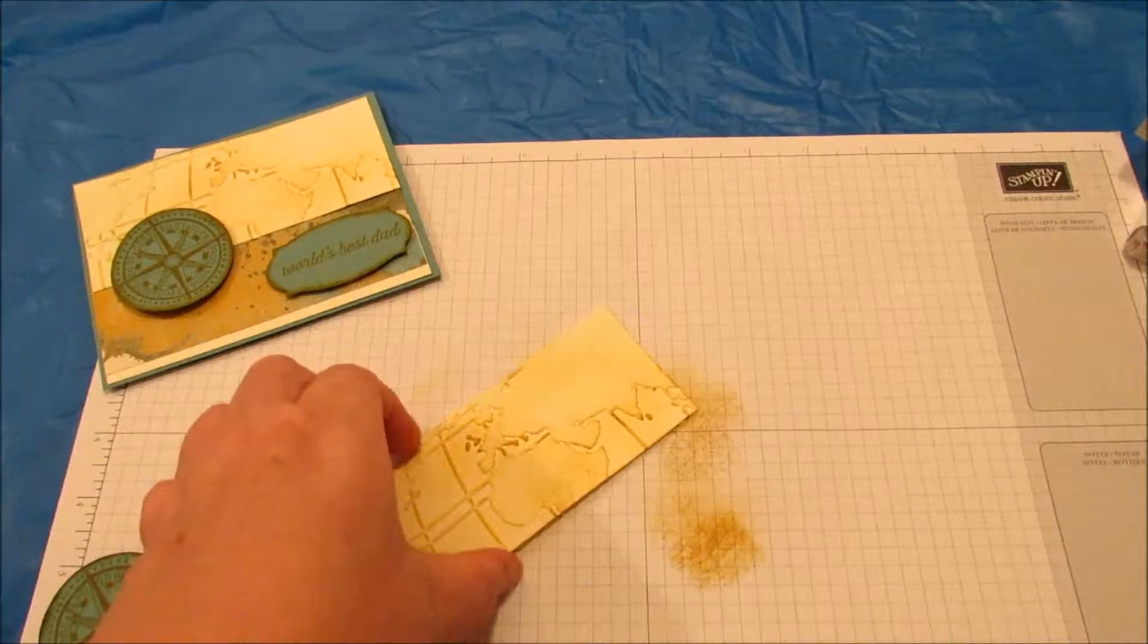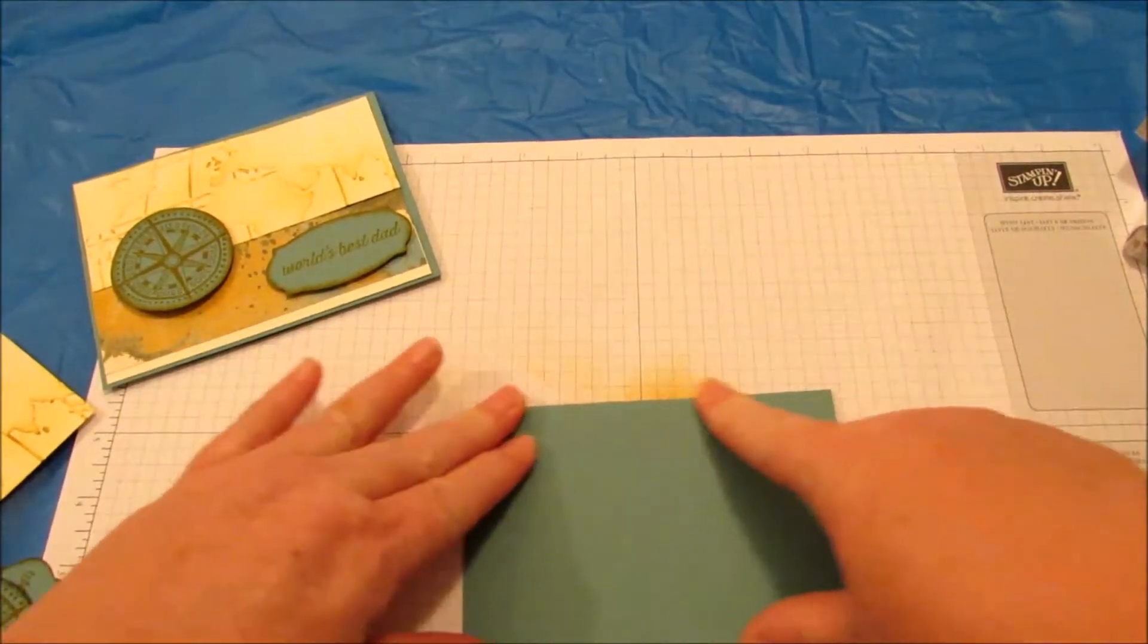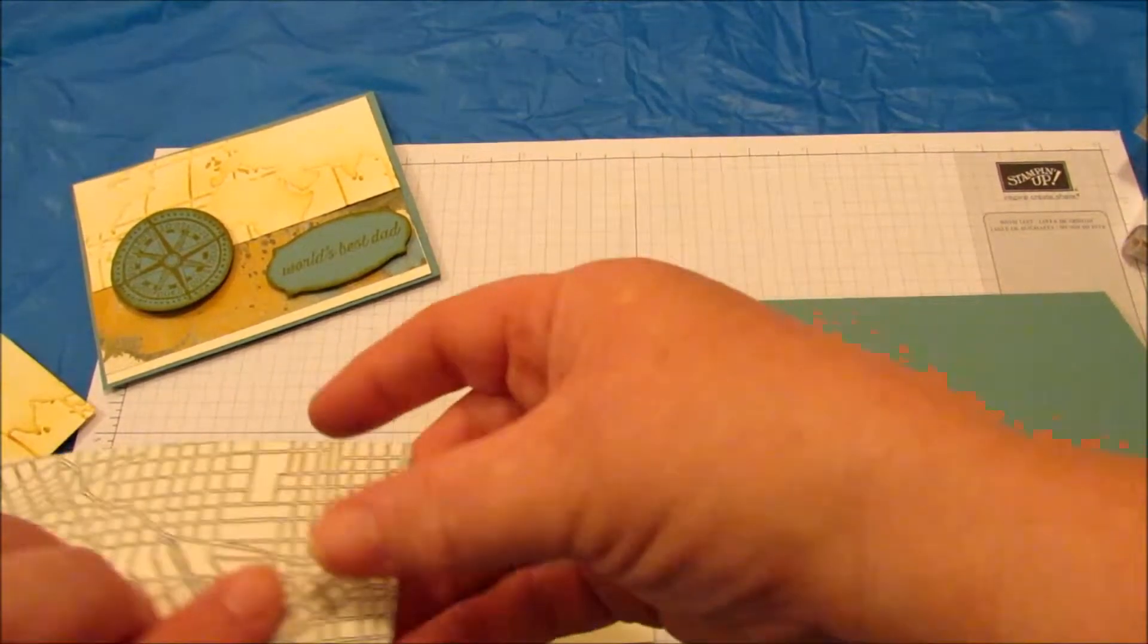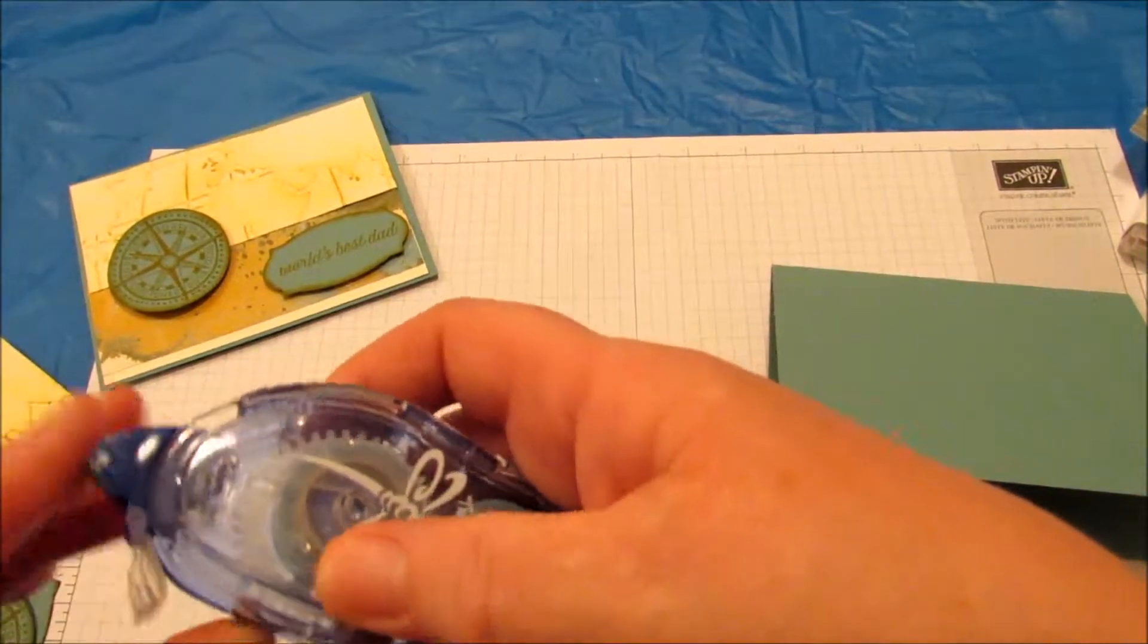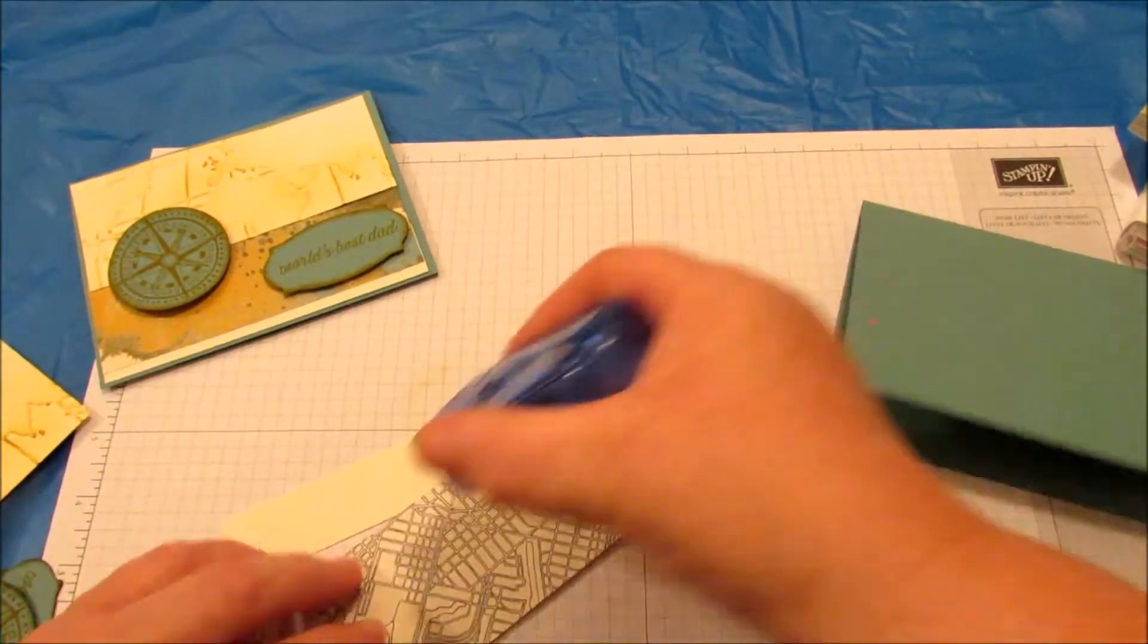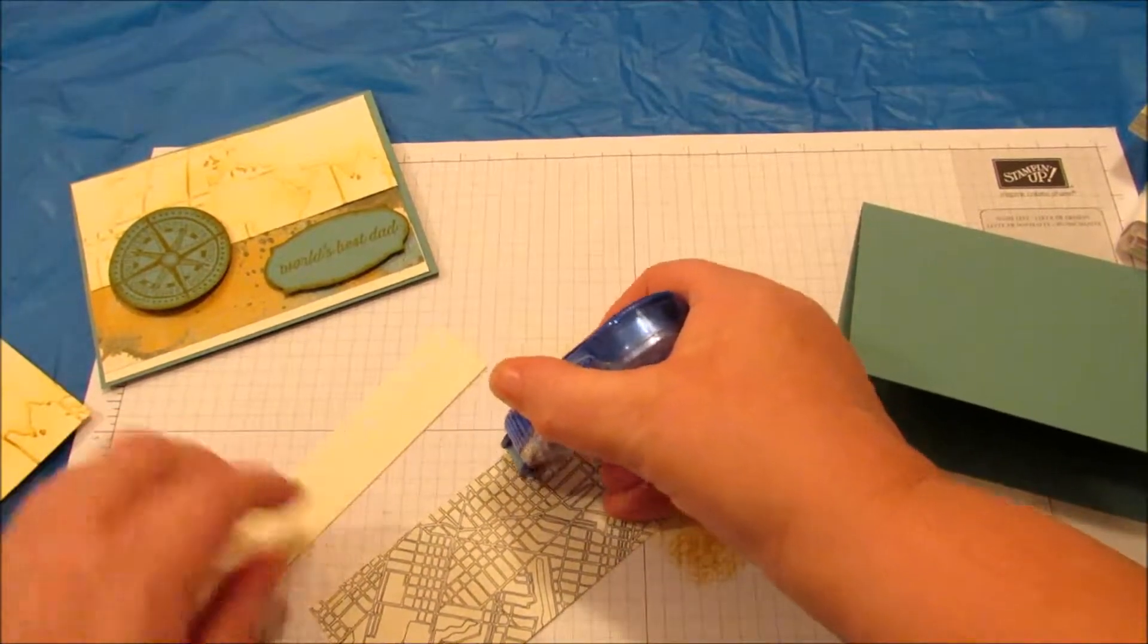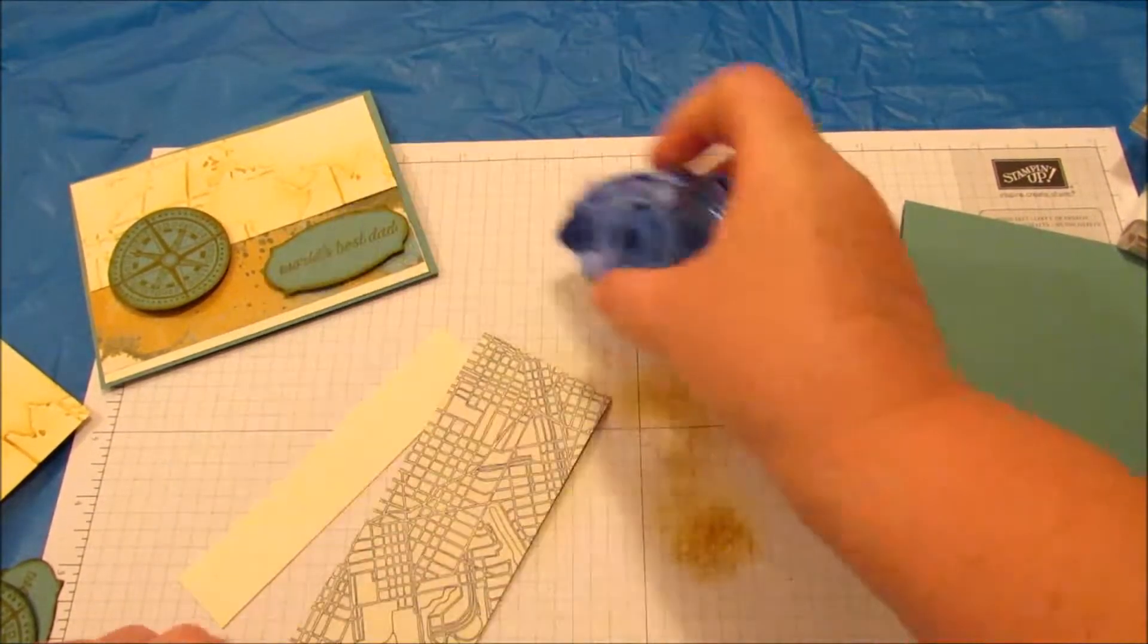Now we can start layering our piece. So we have our card base. Before that, I'm going to put Snail adhesive on the back of my designer series paper along the bottom. And just a little ways up the top for now.